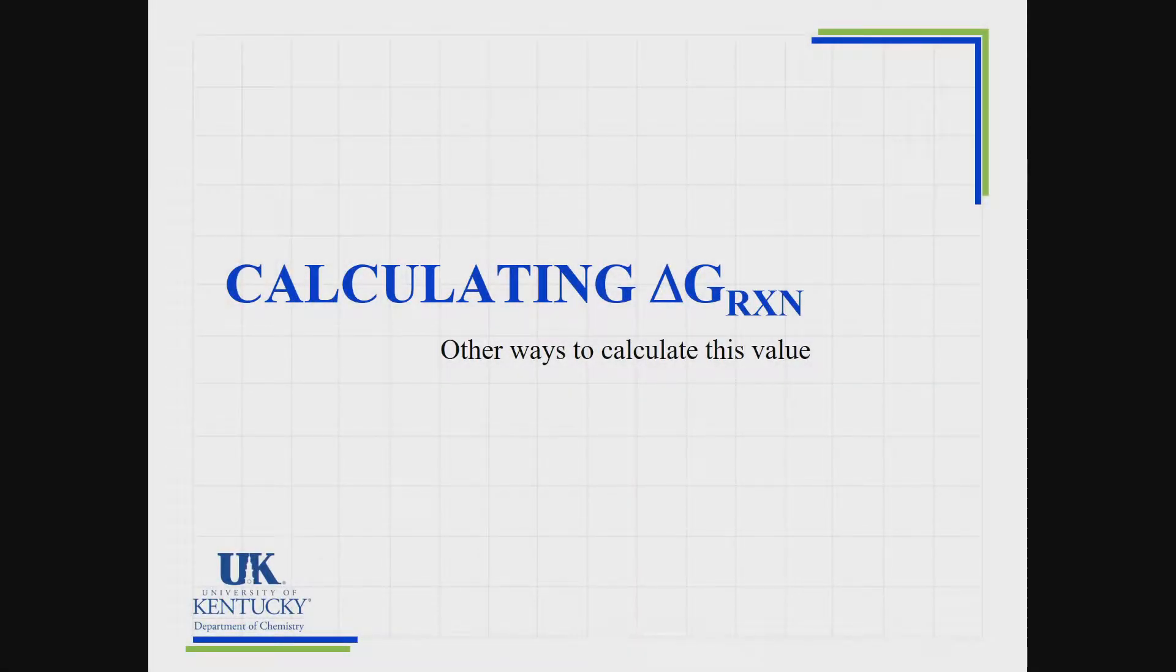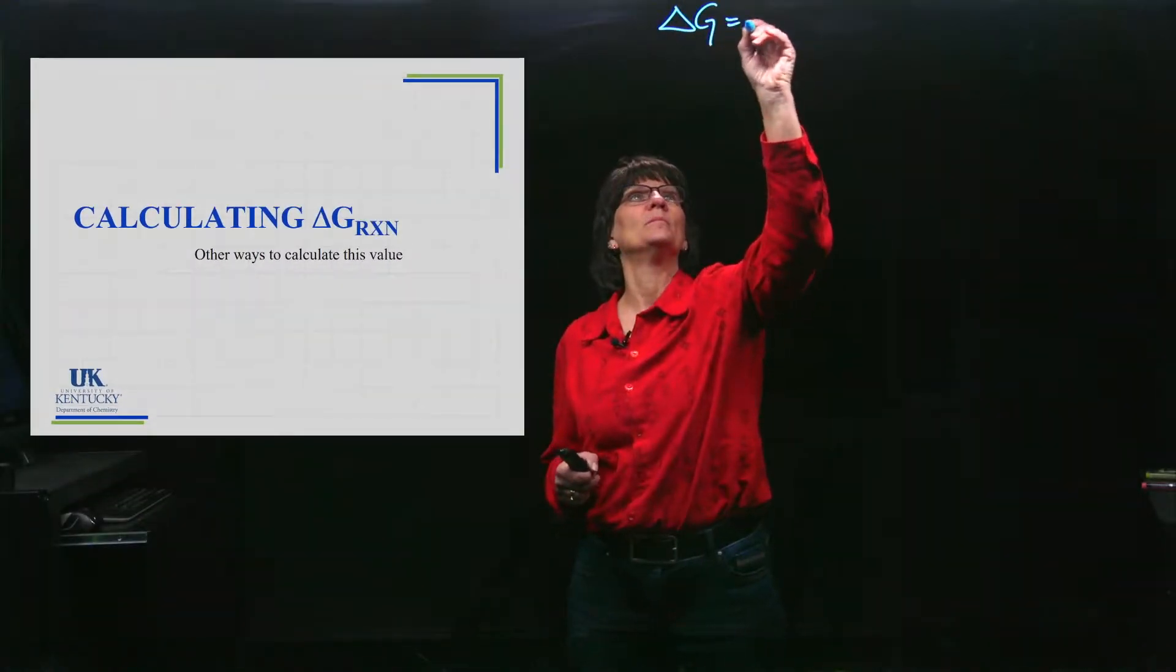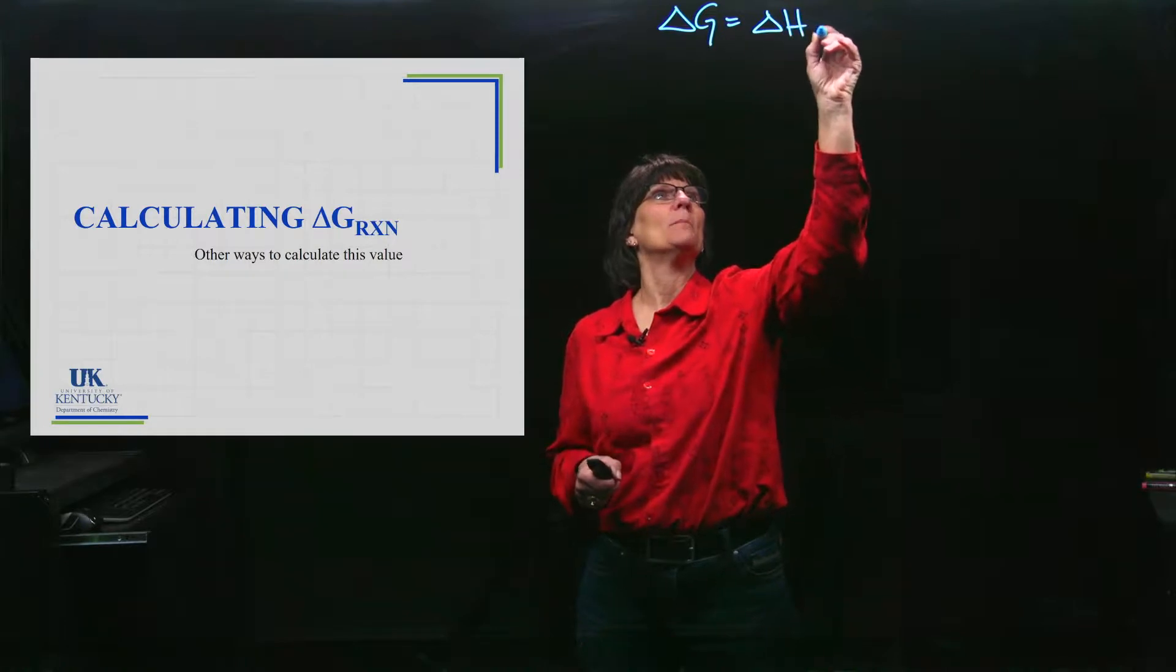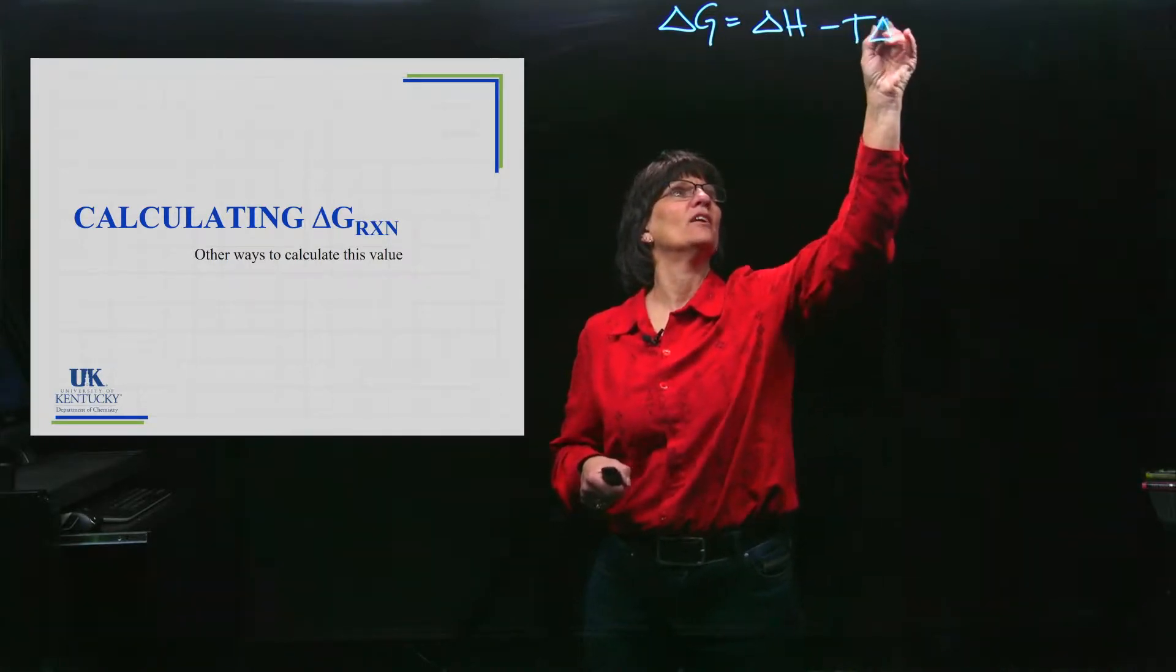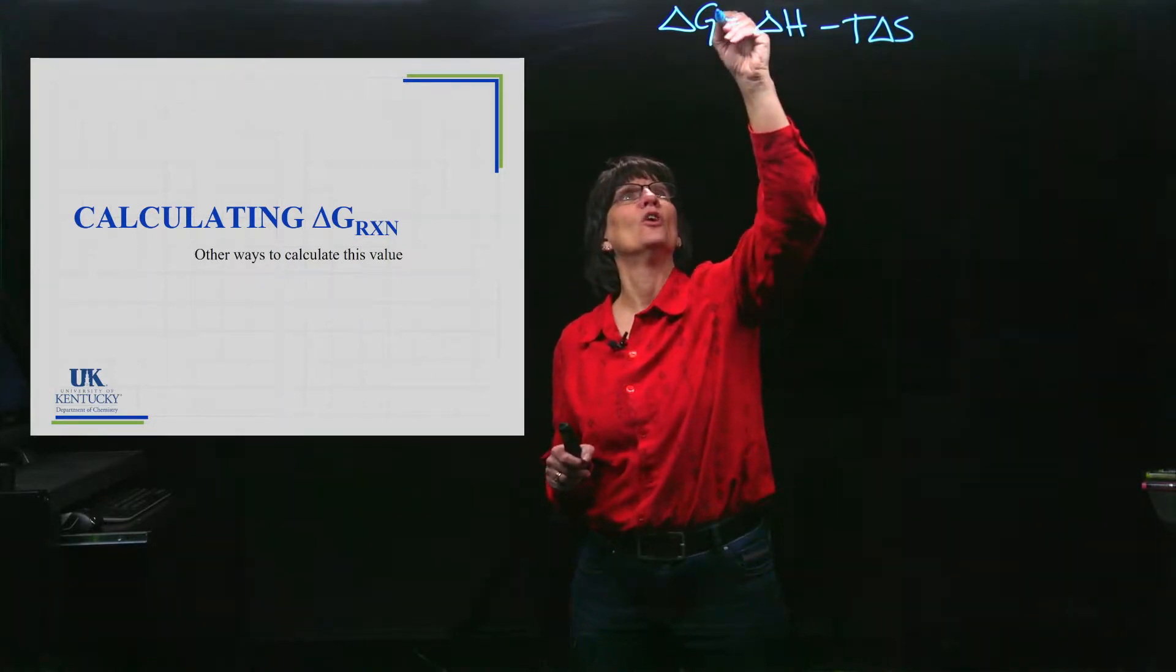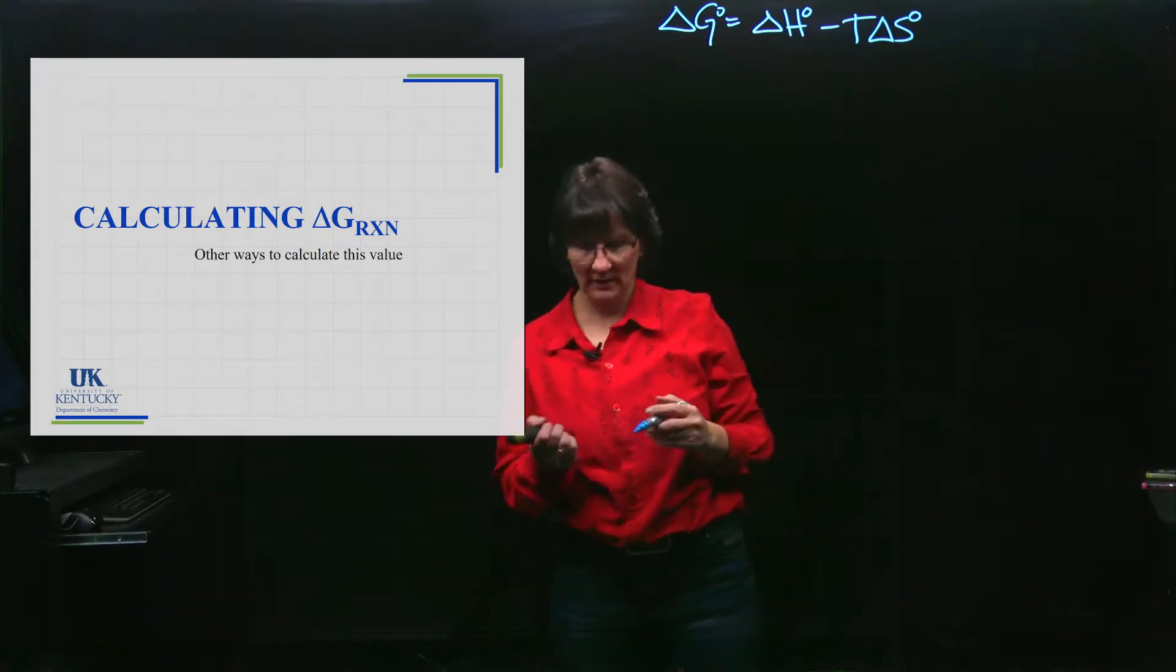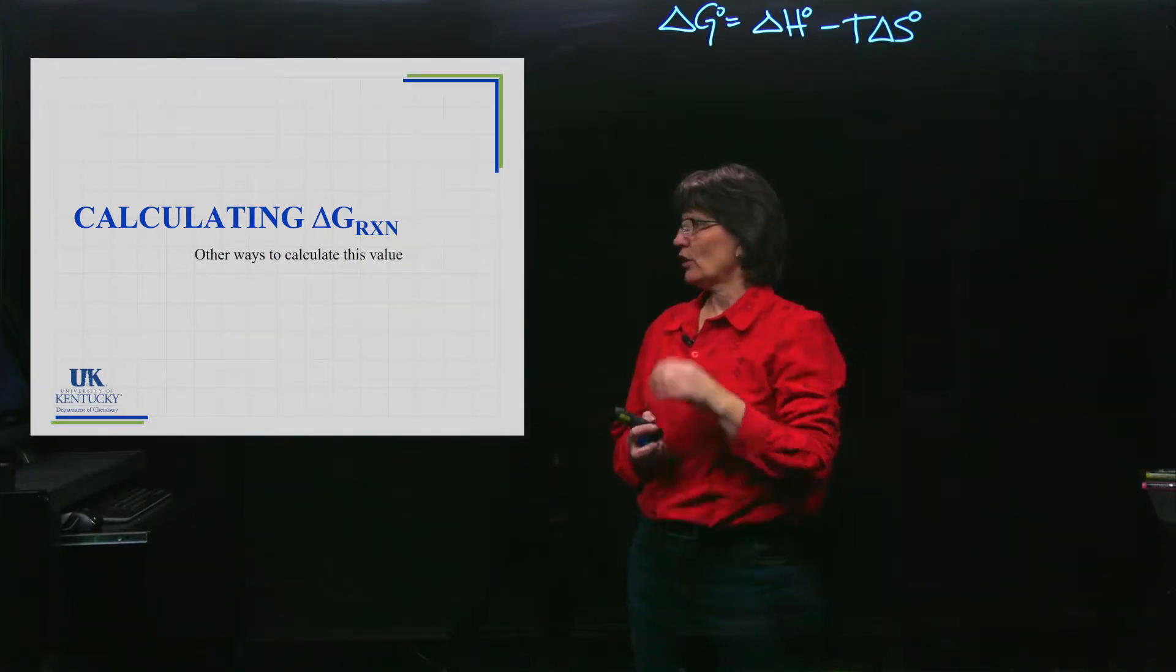We learned one way to calculate Delta G of a reaction using the equation Delta H minus T Delta S. That equation works whether we're in standard state conditions or not. We can make connections and we're going to learn another way to calculate Delta G.